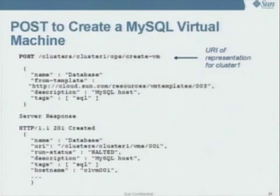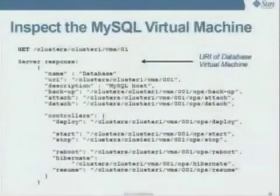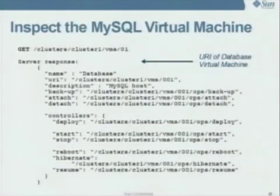To create a virtual machine, all you do is POST to the URI that you were provided. In this case, we've spawned a MySQL virtual machine, which we can now put into our application. If we want to look at this machine after it's been instantiated, we can inspect it by doing a GET to the URI for this virtual machine.